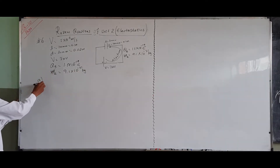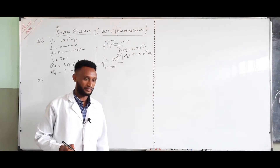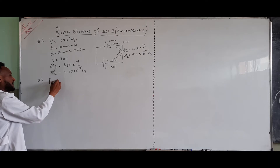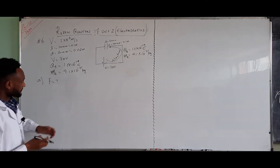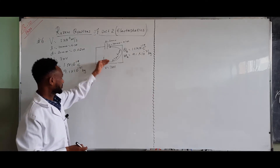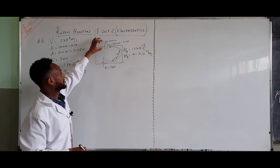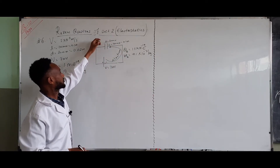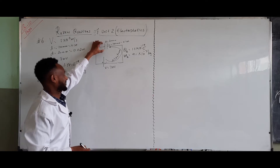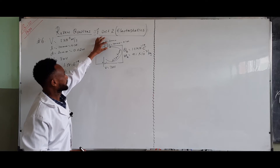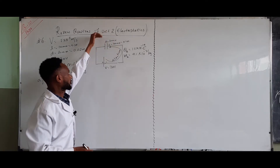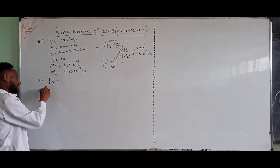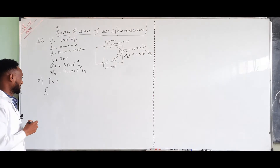Part A: what is the size of the force the electron will experience when it passes through the plates? To find this force, we know that the electric field strength is relevant here. The electron flows through the capacitor plates which are 0.1 meter long and 0.02 meter apart.